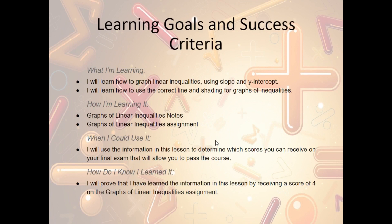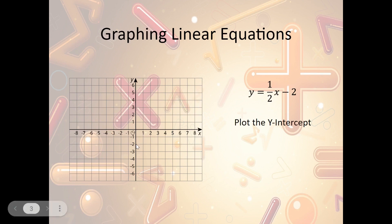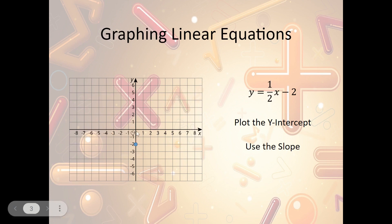Let's take a look at the graphs of linear inequalities notes. First, let's review how we graph linear equations. When we graph a linear equation, we pick out the slope and the y-intercept and graph those points. We plot the y-intercept, which in this case is negative 2, so I go down 2 and plot my point. Then I use the slope — change in y of 1, change in x of 2 — so up 1 to the right 2, plot my second point, connect the dots, and I have a linear equation graphed.